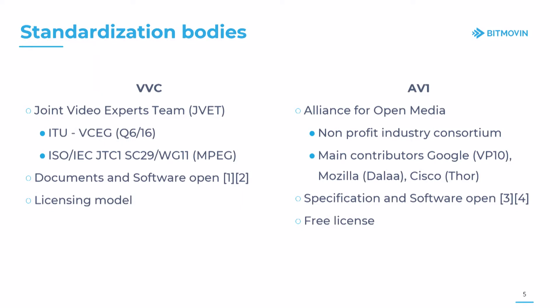The two main codecs I'm going to talk about are VVC and AV1. For VVC, that is the Joint Video Experts Team — ITU and MPEG joined together to do the standardization. They also joined together for AVC and HEVC. The standardization goes on through these parent bodies, and if you want to propose something — if you want to get your patented technology into the codec — you have to be a member of either of these organizations. But overall, it's very open; you just have to be a member and then you can propose stuff.